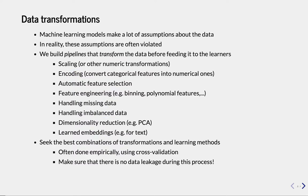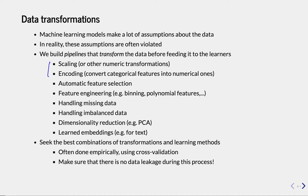Whenever we have selected our cleaning steps, we need to find the best combination of transformations and learning methods. Often we do this empirically — we use cross-validation to tune our pipelines to our data. Sometimes we have to tune hyperparameters over learning algorithms, choose between different preprocessors, and sometimes these preprocessors also have their own hyperparameters. Very importantly, we must make sure there is no data leakage — when we transform this data, no data should leak from the test data into our training data. In this first video, we'll touch upon scaling and encoding, and how to do cross-validation over these pipelines.